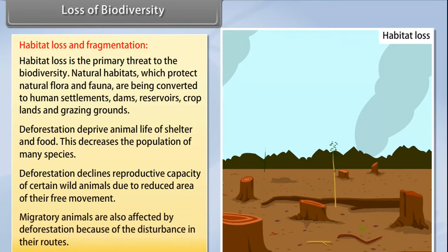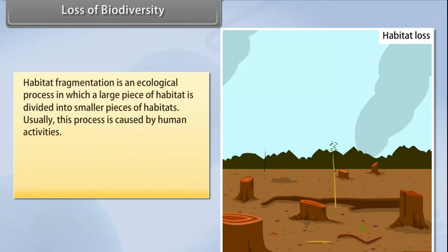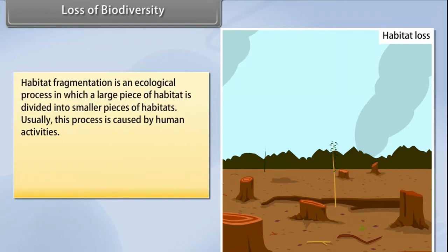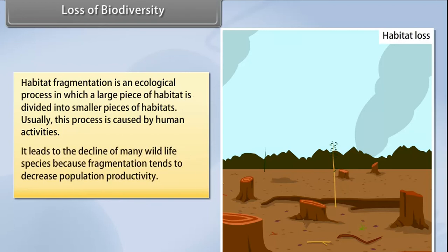Migratory animals are also affected by deforestation due to disturbance in their routes. Habitat fragmentation is an ecological process in which a large piece of habitat is divided into smaller pieces, usually caused by human activities. It leads to the decline of many wildlife species because fragmentation tends to decrease population productivity.